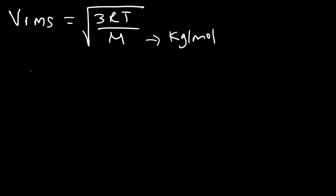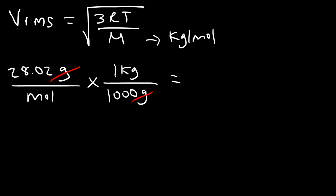Now the atomic mass we said was 14.01 times 2. So that gave us a molar mass of 28.02 atomic mass units, which is the same as grams per mole. But we need to convert grams to kilograms. And you need to know that one kilogram is equal to 1,000 grams. And so 28.02 divided by 1,000, that's going to be 0.02802 kilograms per mole.